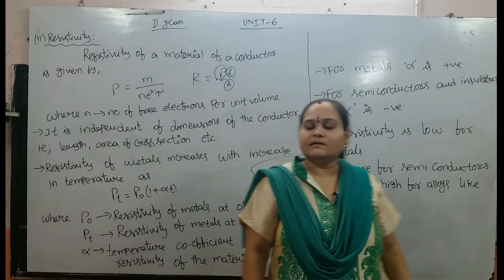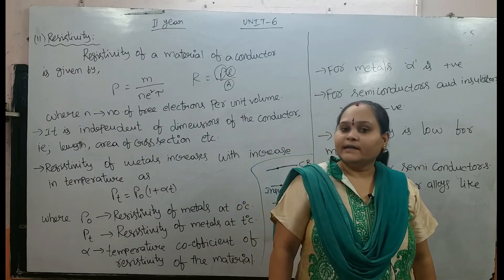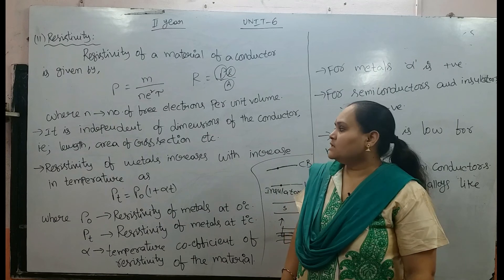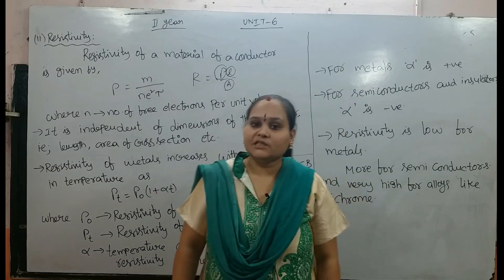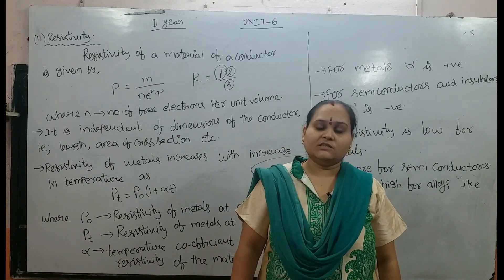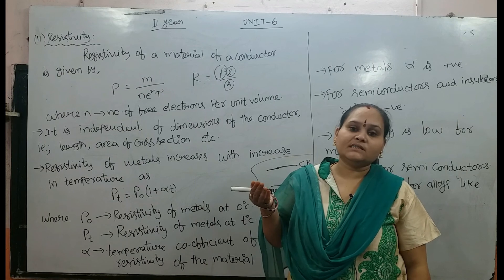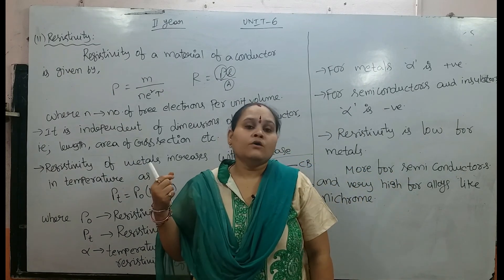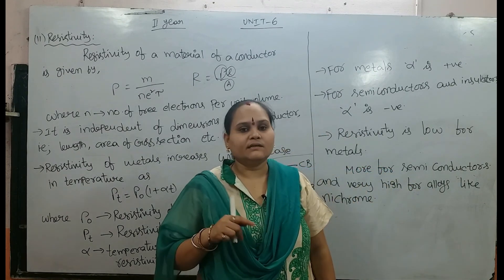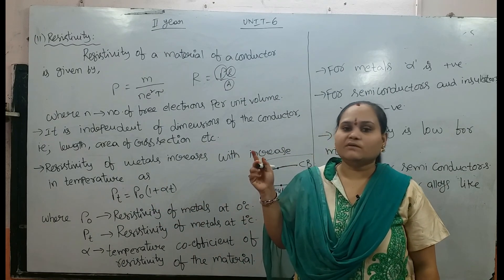To recap: resistivity of a material is defined as rho equal to m divided by n e squared tau, where m is the mass of the electron, e is the electronic charge, n is the number of electrons per unit volume, and tau is the relaxation time. Resistivity is independent of dimensions and only depends on temperature, given by rho_T equal to rho naught times 1 plus alpha T.